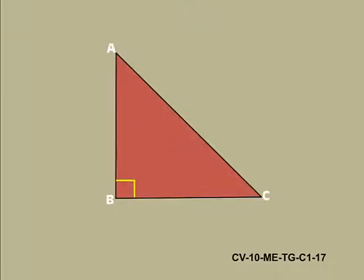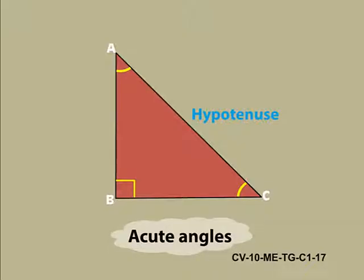Let us consider a right angle triangle ABC. We know that the side opposite to the right angle is the Hypotenuse. Now how many angles are left? Good. Two angles. What type of angles are they? Yes, you are right. They both are always acute angles.